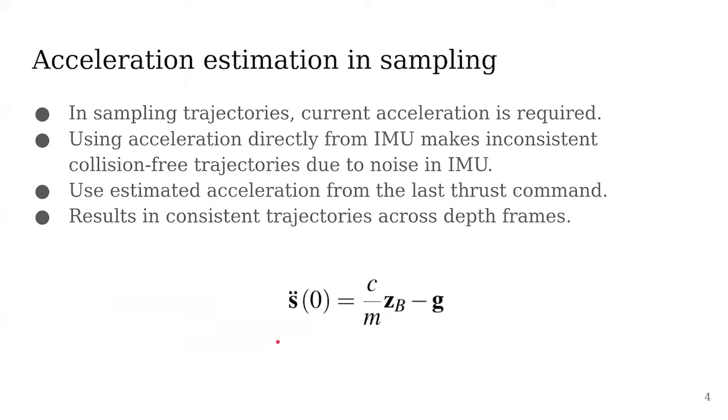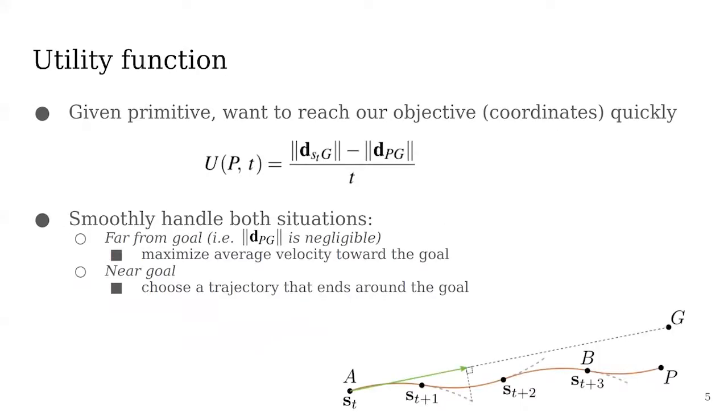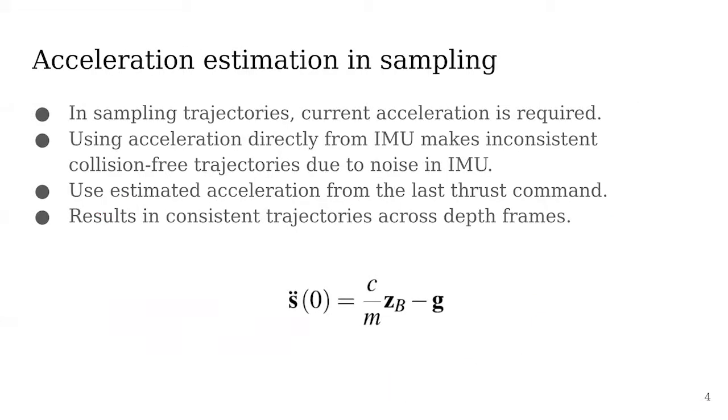In sampling trajectories, we need acceleration. Instead of using acceleration directly from IMU, which is noisy and results in inconsistent trajectories, we use the estimated acceleration. Specifically, we use this equation. C is the thrust command, M is the mass of the vehicle, z_B is the body axis z, and g is gravity. This results in consistent trajectories across time steps.